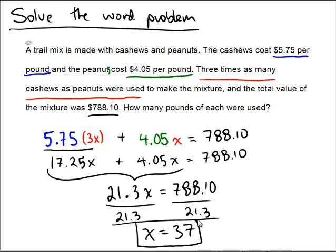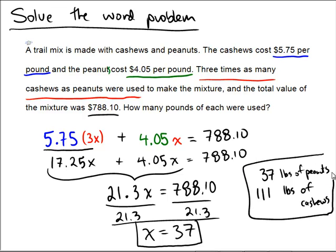So it looks like we have 37 for x. And remember, that's the number of pounds of peanuts. So you have 37 pounds of peanuts. And as far as the cashews go, those were three times as many. And 37 times 3 is 111. So we have 111 pounds of cashews.